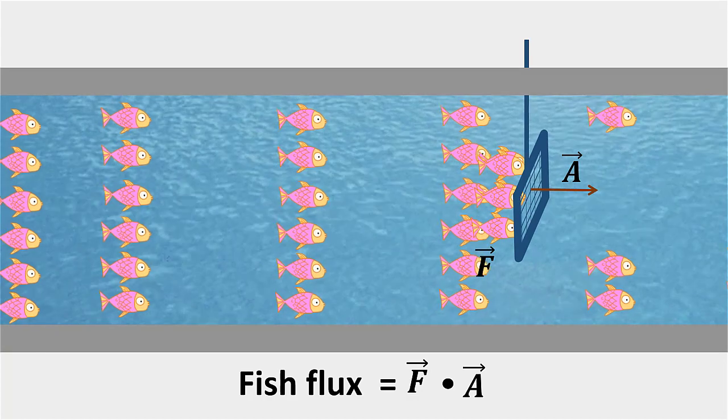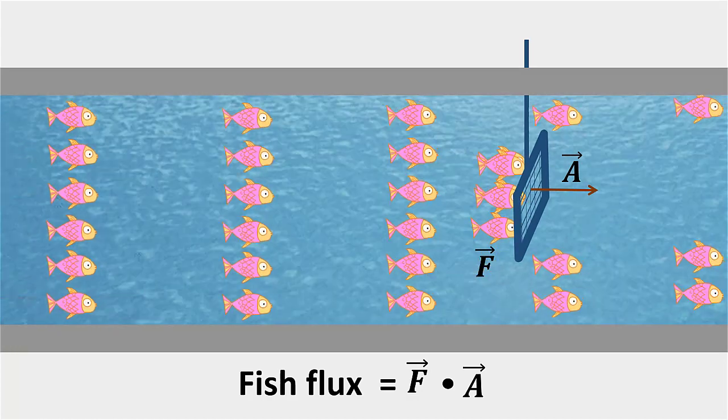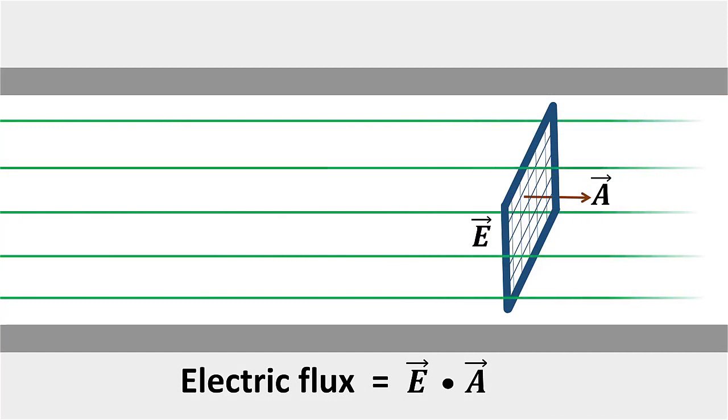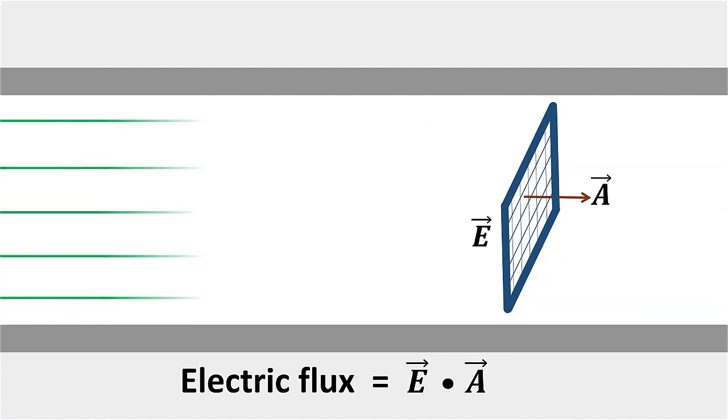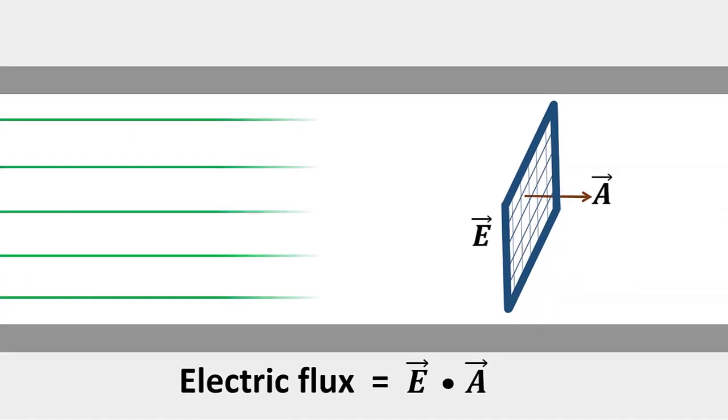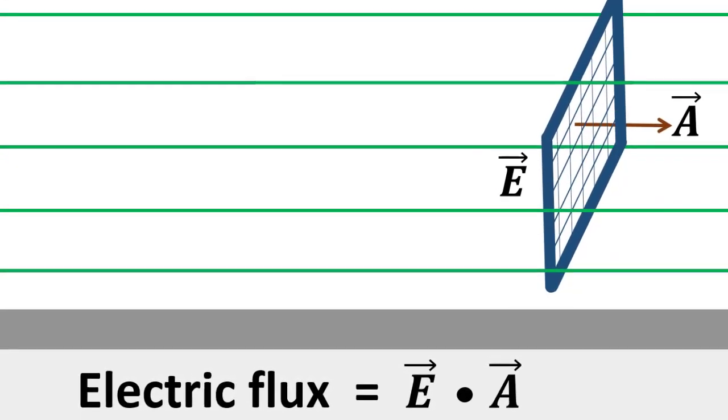Just replace these fish lines by the electric field lines. Like fishing density F, here electric field density E, then the amount of field lines in a given region equal to electric field dot area vector. That is, electric flux equal to vector E dot vector A.